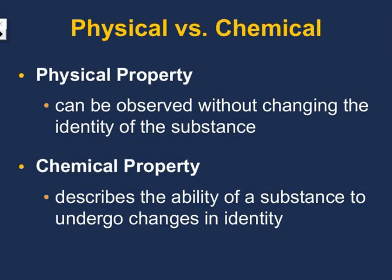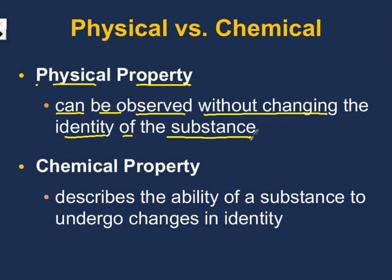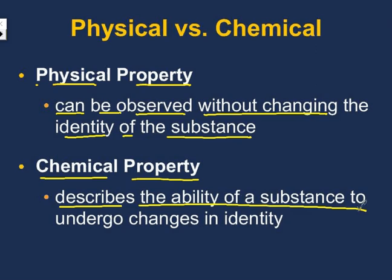Let's start with properties. What does it mean to have a physical property and what does it mean to have a chemical property? A physical property is something that can be observed without changing the identity of the substance — things like color or mass that you can observe without altering it. A chemical property is when you actually change it into a different substance, something you will see when it changes into something new. It describes the ability of a substance to undergo changes in identity.